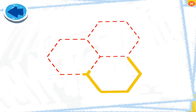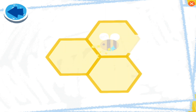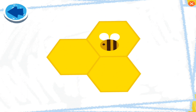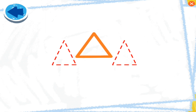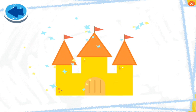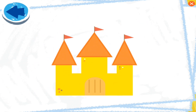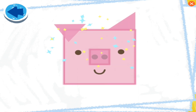This picture has hexagons. Boy, Elmo wonders what it is. Boy, Elmo wonders if this honeycomb has any honey. This picture has triangles. Boy, Elmo wonders what it is. Oh, Elmo sees it's a sand castle! This picture has squares. Boy, Elmo wonders what it is. Oh boy, it's a piggy face!